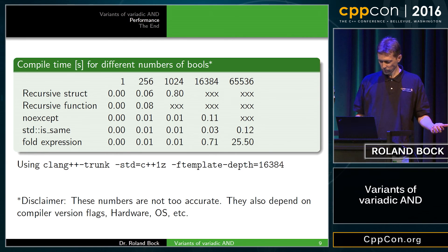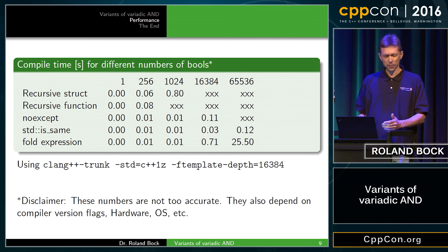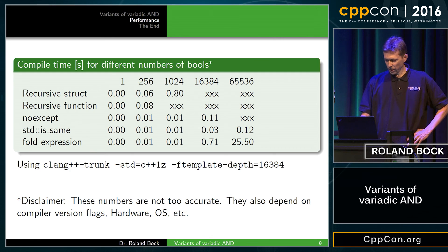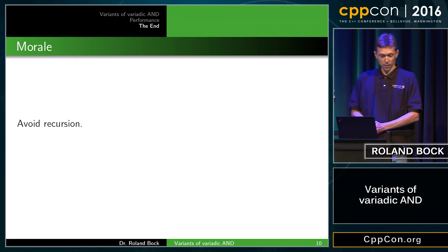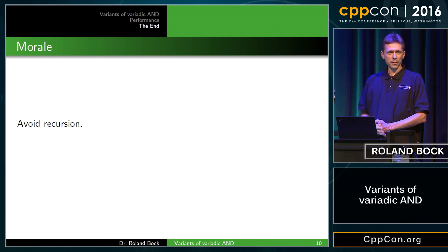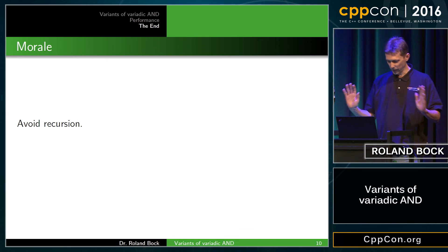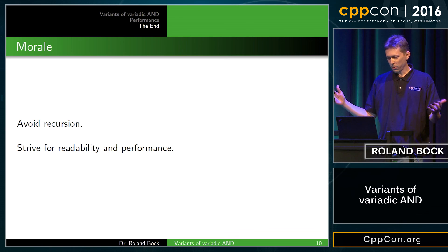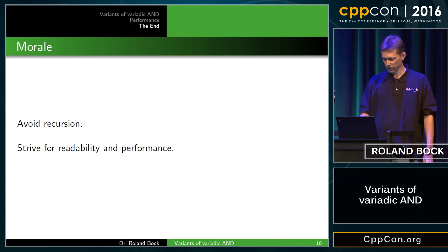That is a surprise — I didn't expect that. But it's a new feature, so maybe compiler vendors will catch up. The moral with variadic templates: avoid recursion — it is evil. Also strive for readability and performance. If you have to choose, I'm always going with readability because I have to maintain the code — but that's my choice. Thank you very much.